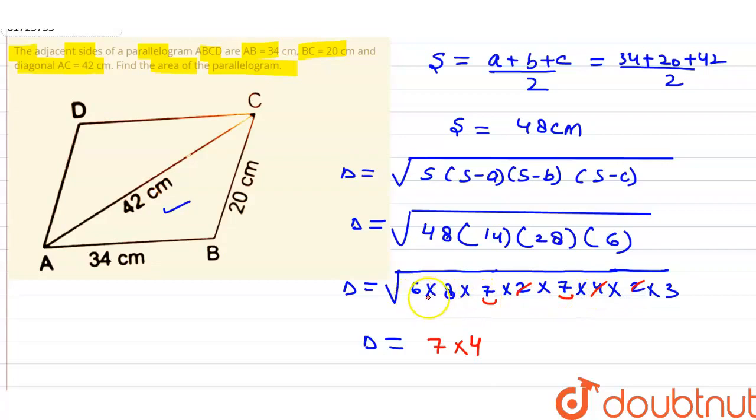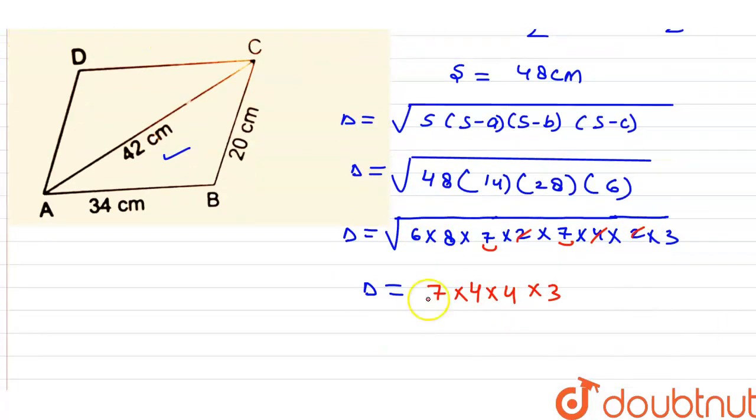Now, if you look at 6, it's 2 into 3. So there was a 2 here, so 4 comes out of here. And 3 into 3, so one 3 comes out. So how much did we get? Delta finally is 7 into 4 into 4 into 3. So the answer is 336 cm². This is the triangle area.